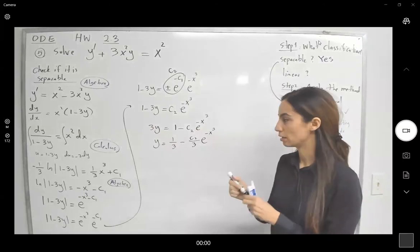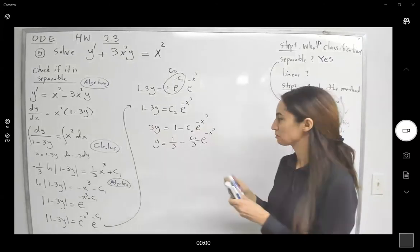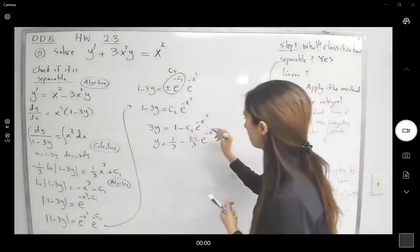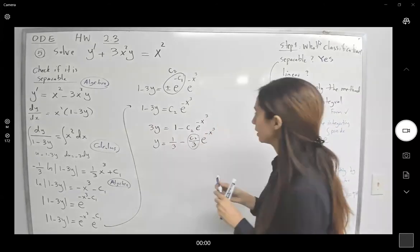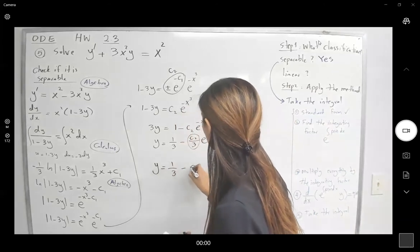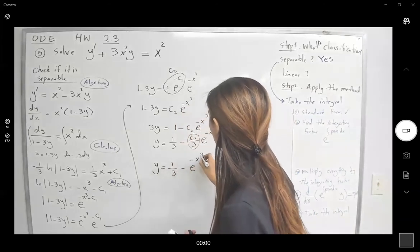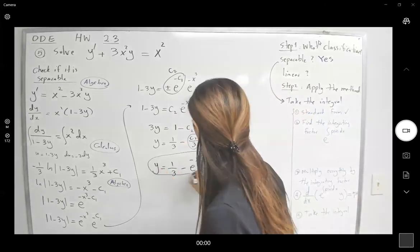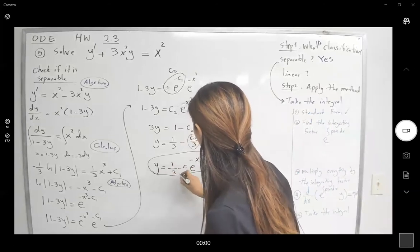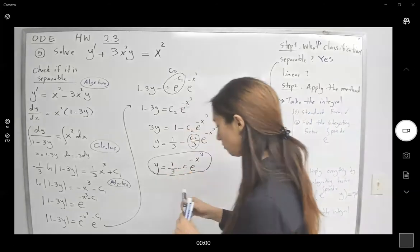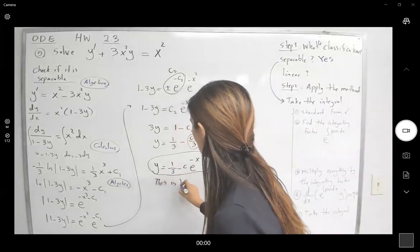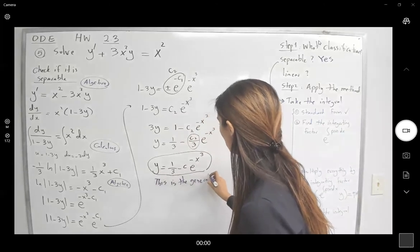We have another constant, so let's rename it c₃, or just c in general. We're left with y equals one-third minus c times e to the power negative x cubed. We've got the general solution. Don't forget: this is the general solution for this differential equation, which is separable.